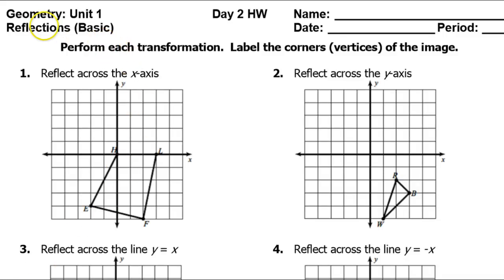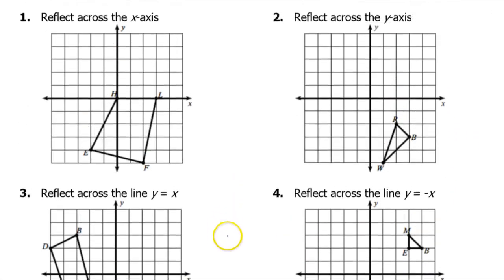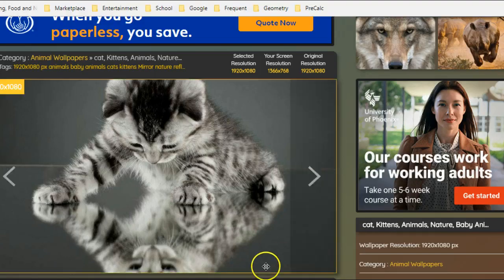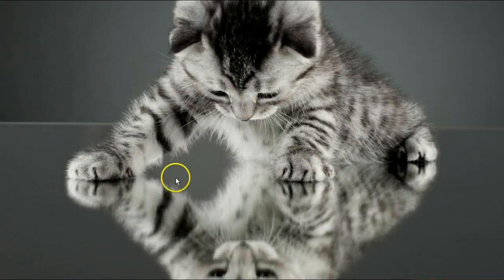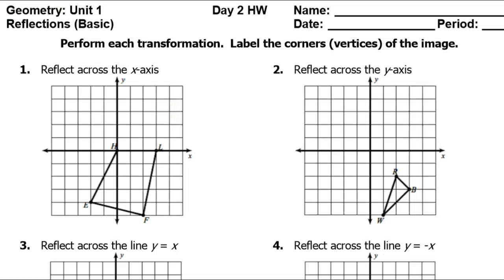In this video we will be talking about reflections — reflections of points and shapes over lines like the x-axis, the y-axis, or the line y equals x, which is a diagonal line. Throughout this video you should be picturing mirror images, and if it helps, picture this adorable kitten looking at his or her reflection. Think about mirror images as we go through this lesson.